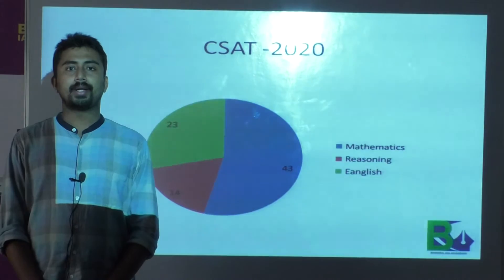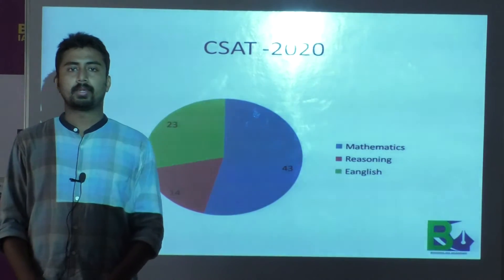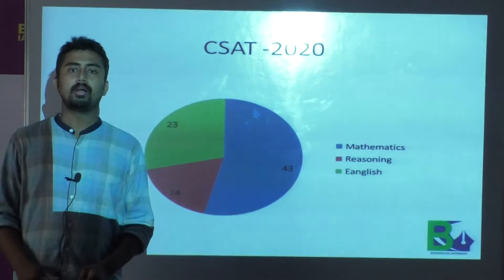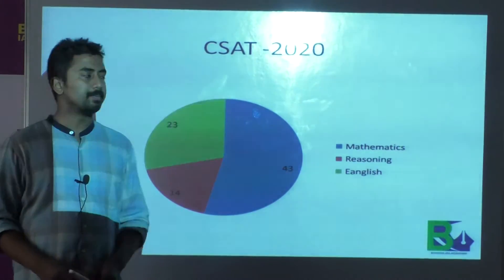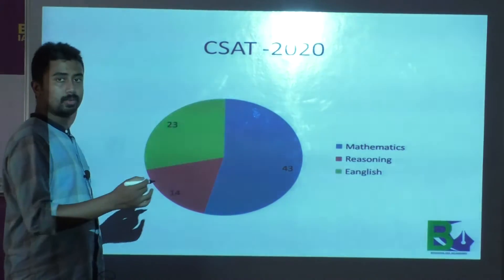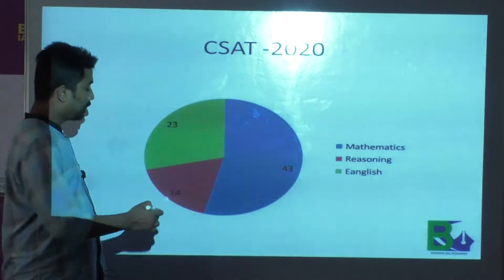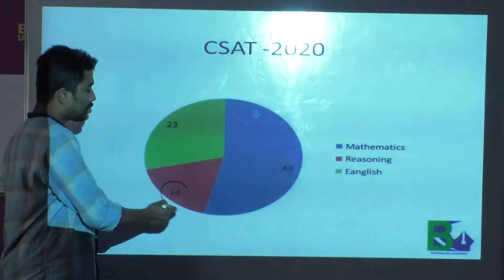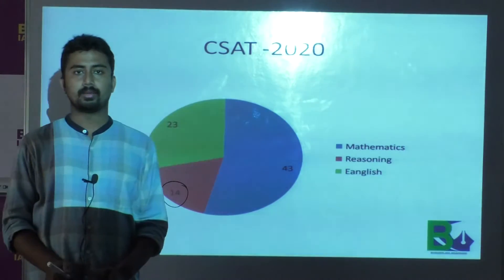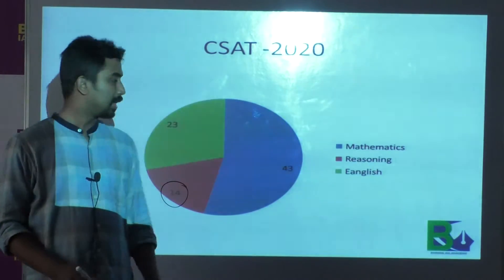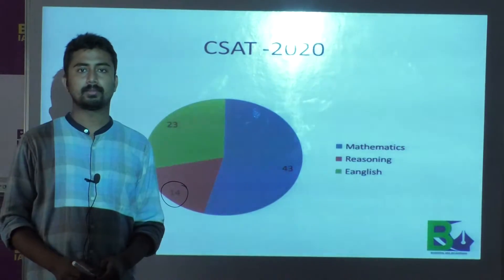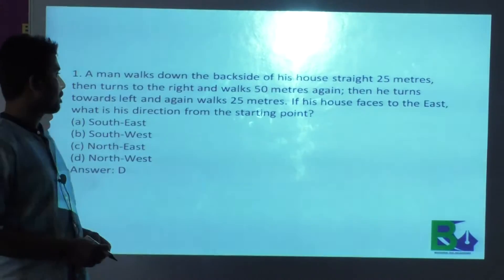As you can note, this is the sectional analysis of the whole paper. We can see that in CSET 2020, the portion from reasoning is only 14 questions compared to 43 from Mathematics. This first question is from direction sense.